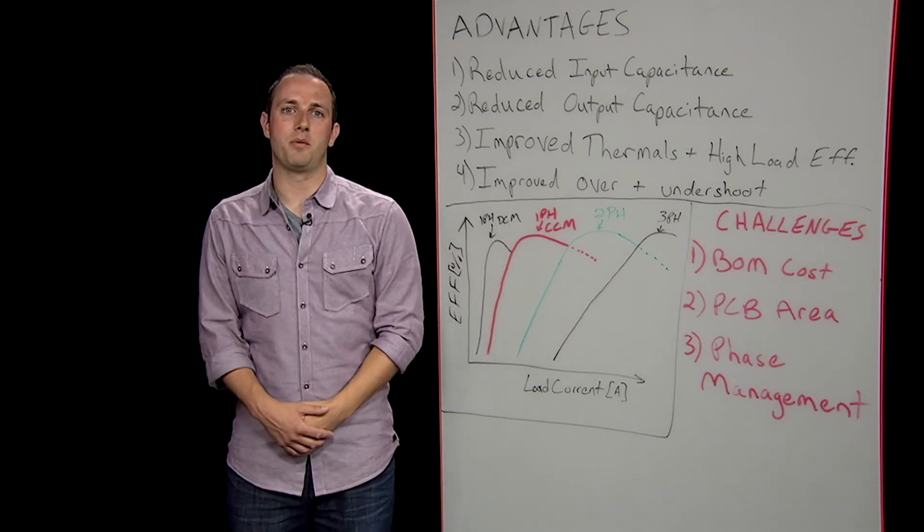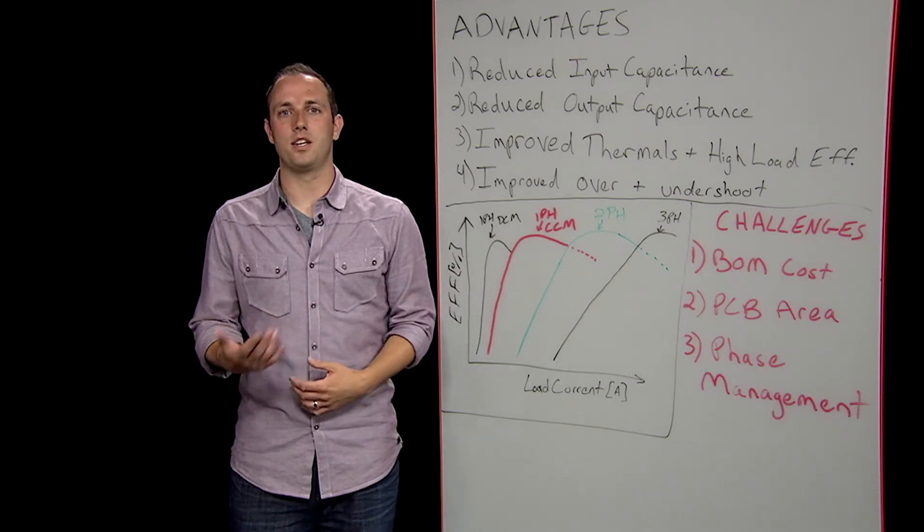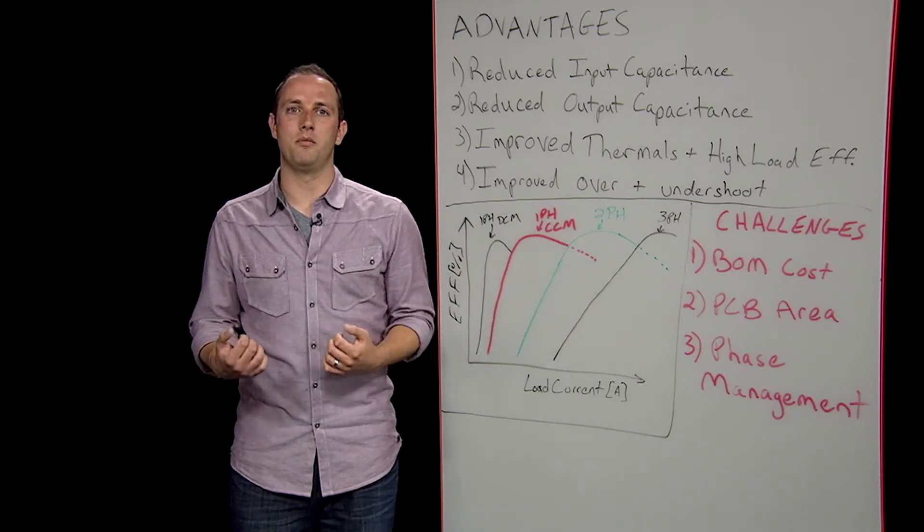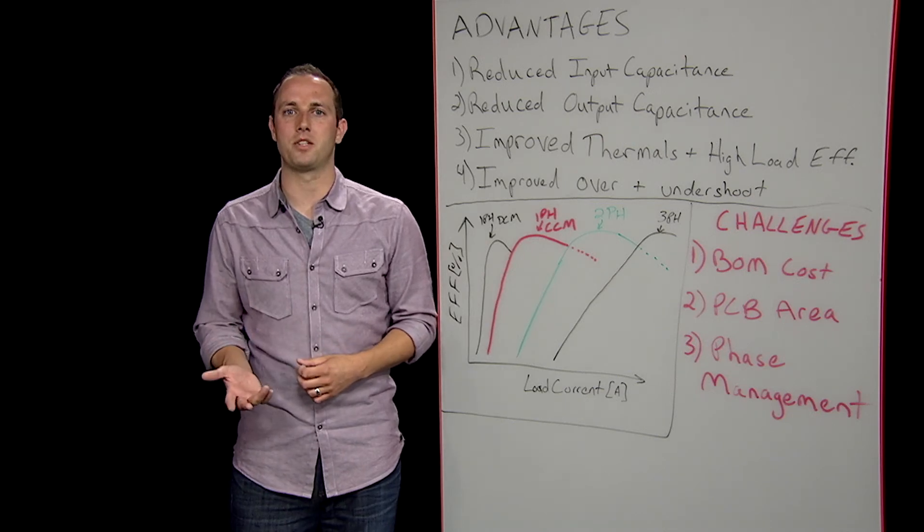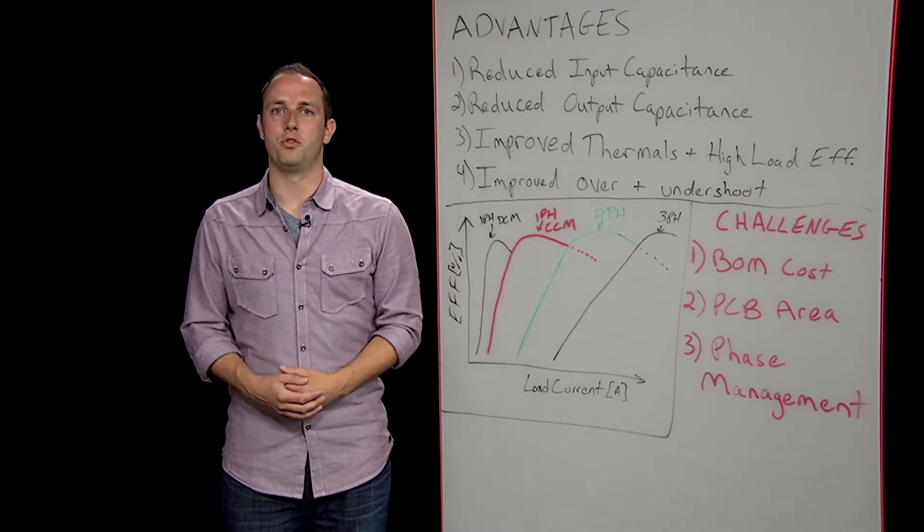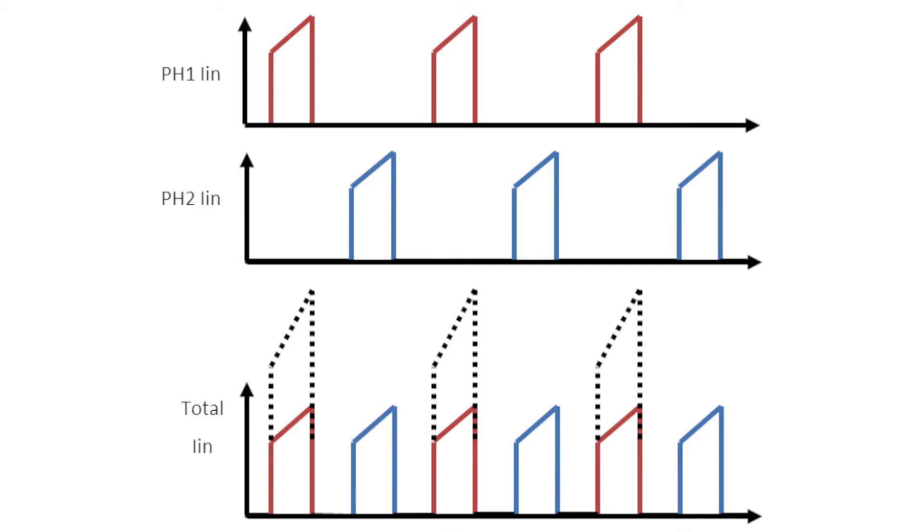You don't need to use as many input capacitors for a design because adding additional phases reduces the RMS input current flowing through the decoupling capacitors and thereby reducing the voltage ripple on VIN. Looking at a two-phase example, the total input current waveform of a two-phase buck versus a one-phase buck has both a lower peak value and an RMS current value. This not only reduces CIN requirements, but also provides less stress on the upper MOSFET of each phase, making it easier to pick a transistor as more components are available to choose from.